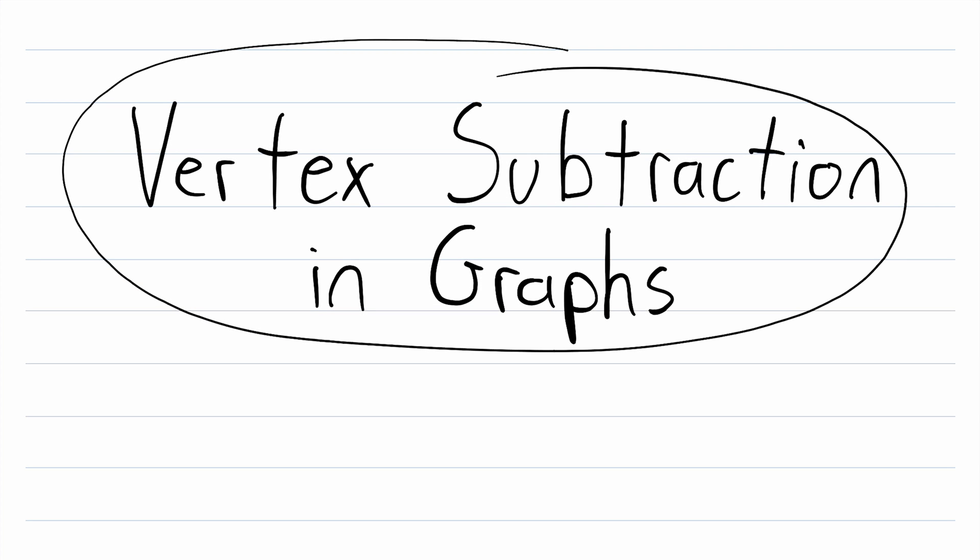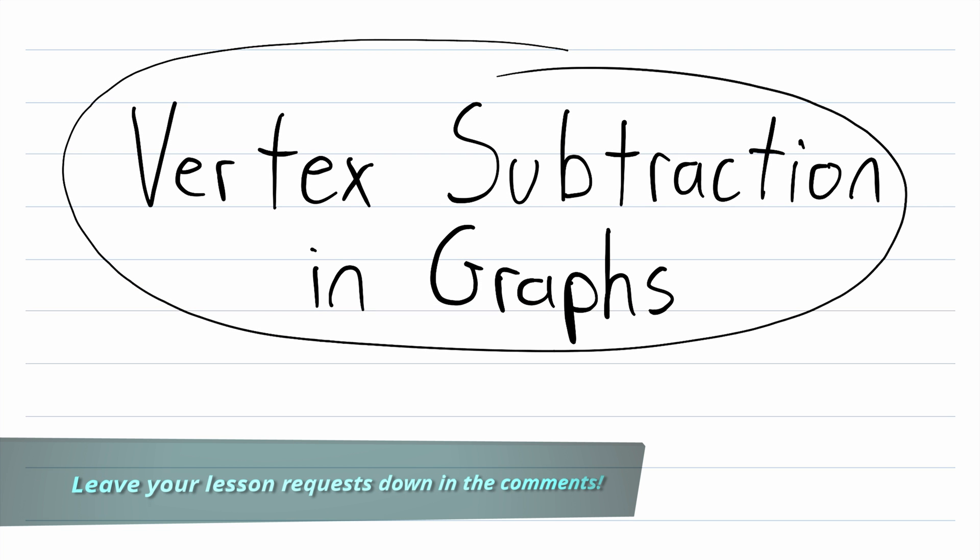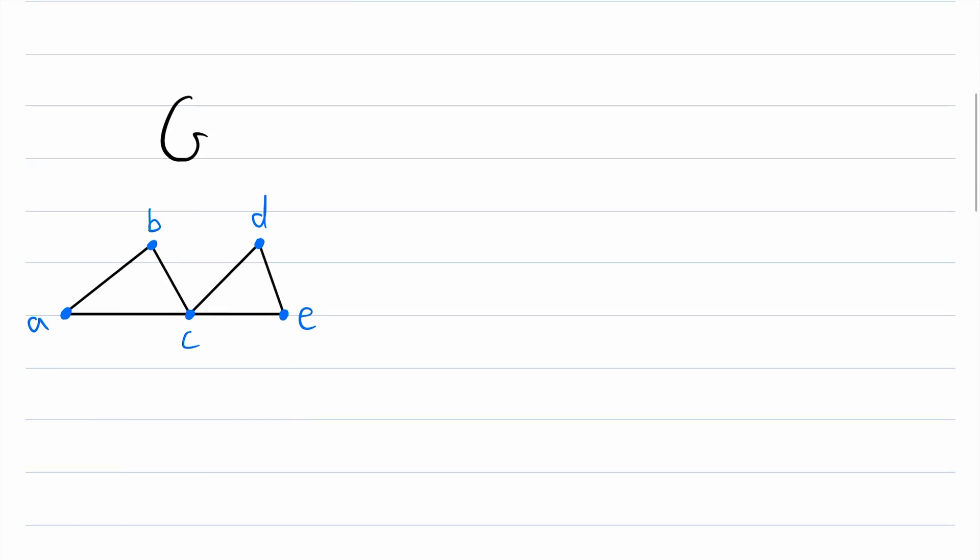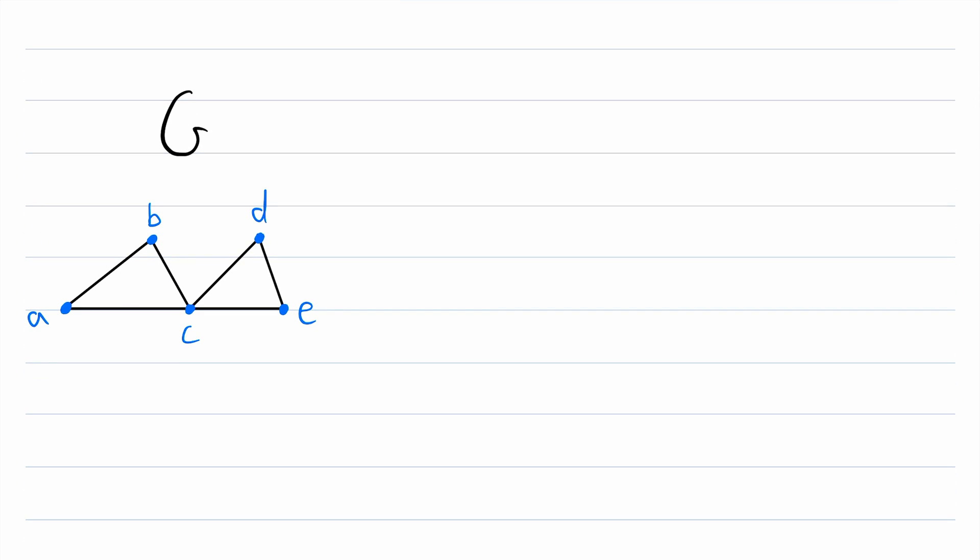What is vertex subtraction in graph theory? Also sometimes just called vertex deletion. Basically, if we have a graph G and we subtract a vertex V, what does that result in? That's what we'll be going over in today's Wrath of Math lesson, and it's not too complicated, so I'll try to make it quick.